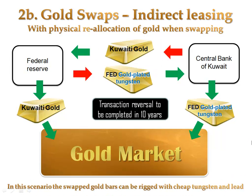In this scenario, the swapped gold is physically transported from one bank to another. Using this kind of swap method, a central bank could be tempted to counterfeit some of the gold bars if they could find a clever way of doing so without being noticed for a long time.